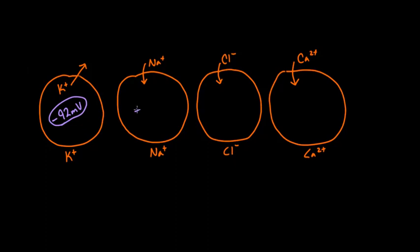For sodium, it turns out to be positive 67 millivolts. These are estimates based on rough concentrations. Concentrations aren't exact everywhere, and different cell types have different concentrations. But these are kind of rough approximations. Chloride would be somewhere around negative 86 millivolts. You know it's negative because a negative ion is entering.